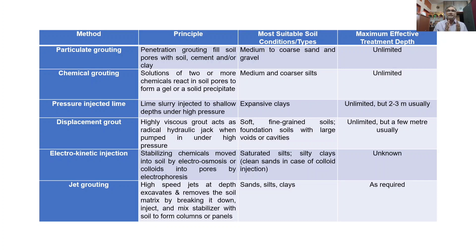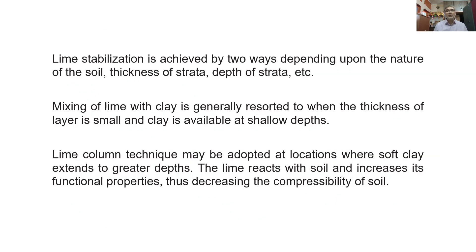Jet grouting uses high-speed jets at depth to excavate and remove the soil matrix by breaking it down, then inject and mix a stabilizer with soil to form columns. These columns can be circular cylindrical columns. It is suitable for sands, sandy clays — essentially all kinds of soils — and the effective treatment depth can be achieved as required.